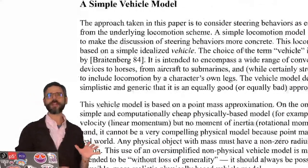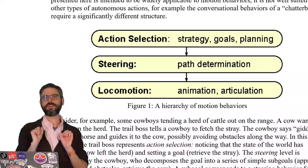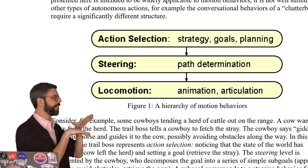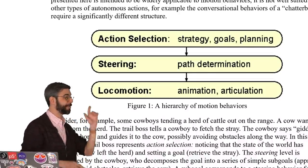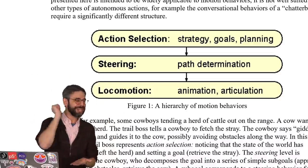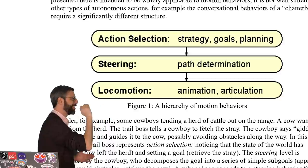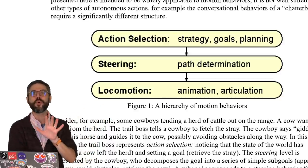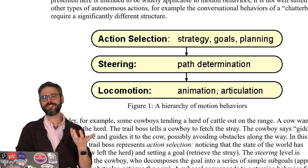In the paper, Reynolds takes the idea of the motion of an autonomous character and divides it into three steps. So I'm going to go through a little bit about these three steps, but I want you to just get out your mental notepad and take a note of this first one. Action selection.